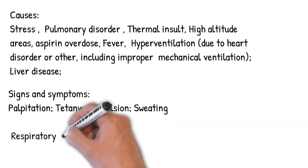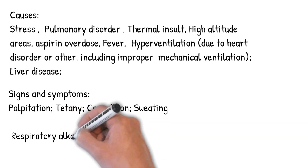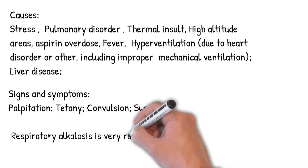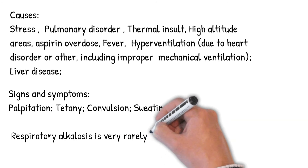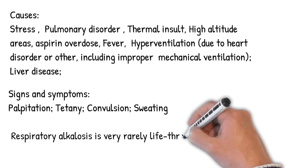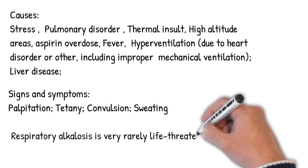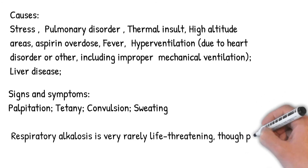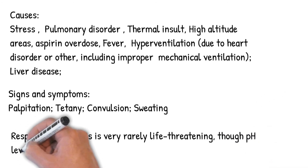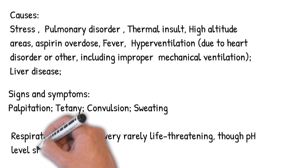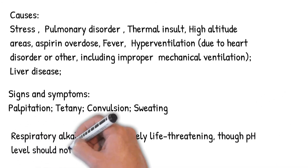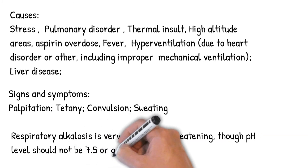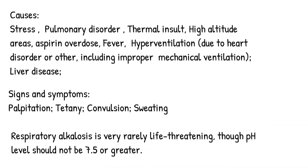The diagnosis of respiratory alkalosis is done via tests that measure the oxygen and carbon dioxide levels in the blood. There are two types of respiratory alkalosis: chronic and acute. Respiratory alkalosis is very rarely life-threatening, though pH level should not be 7.5 or greater. The aim in treatment is to detect the underlying cause.